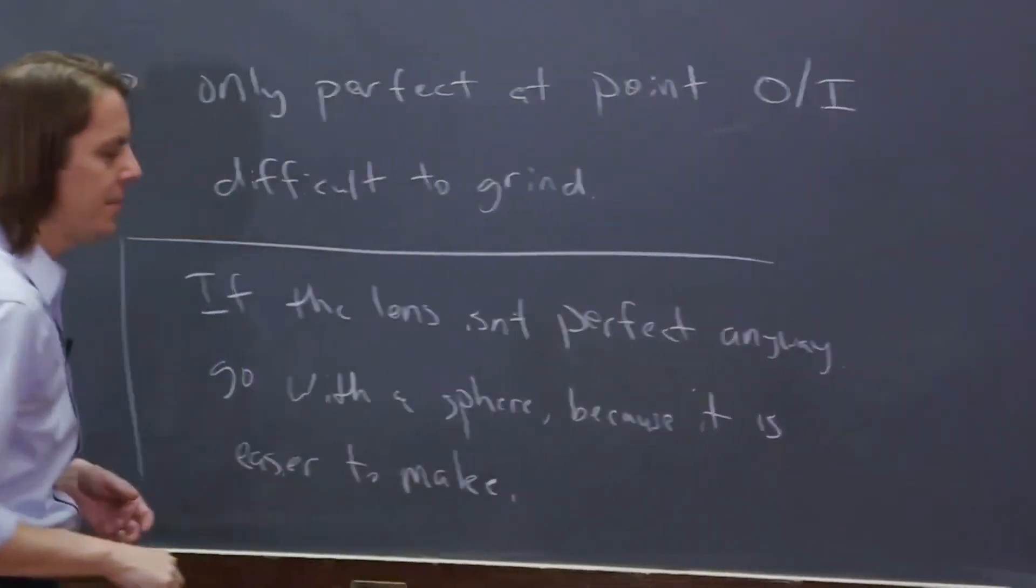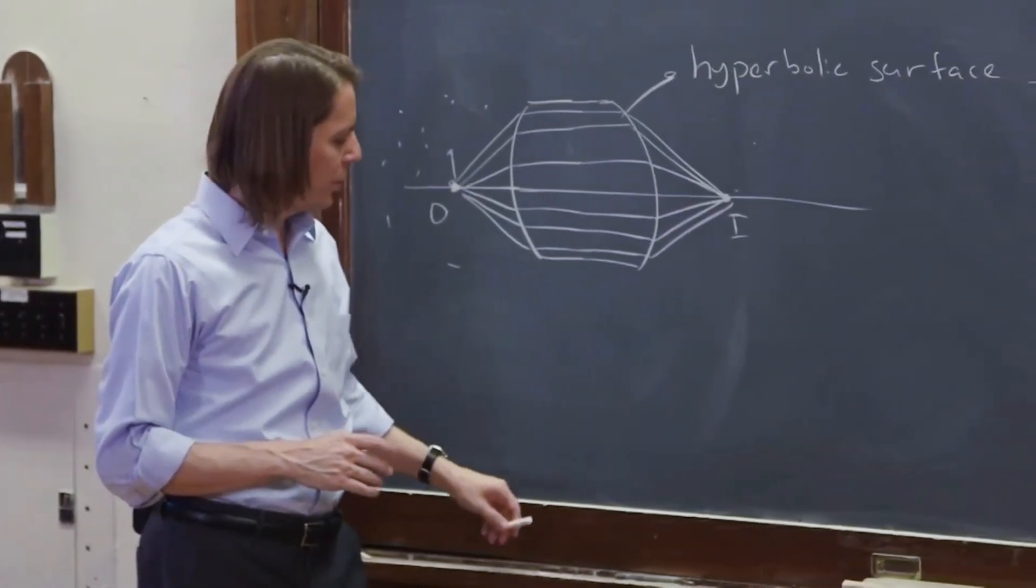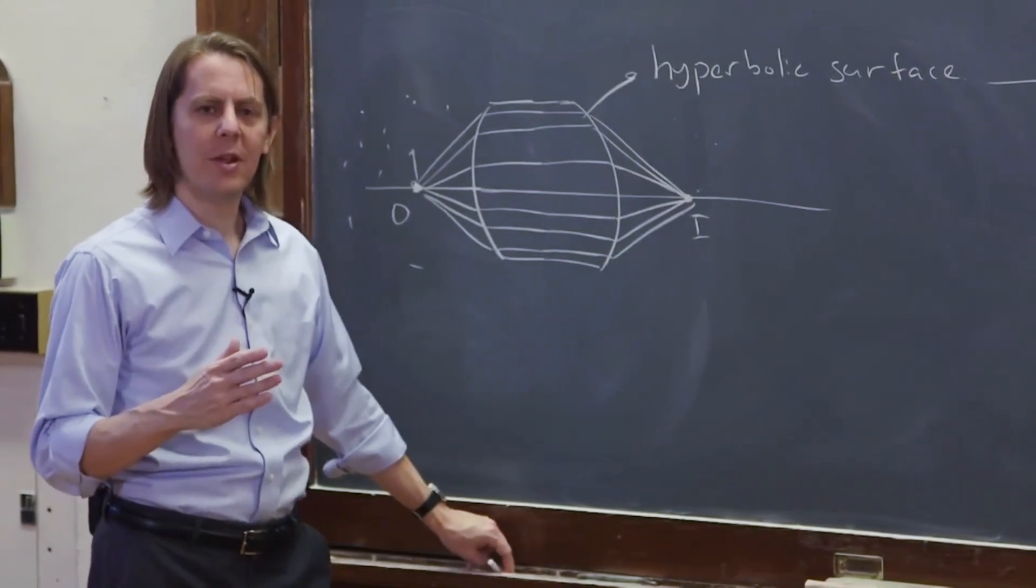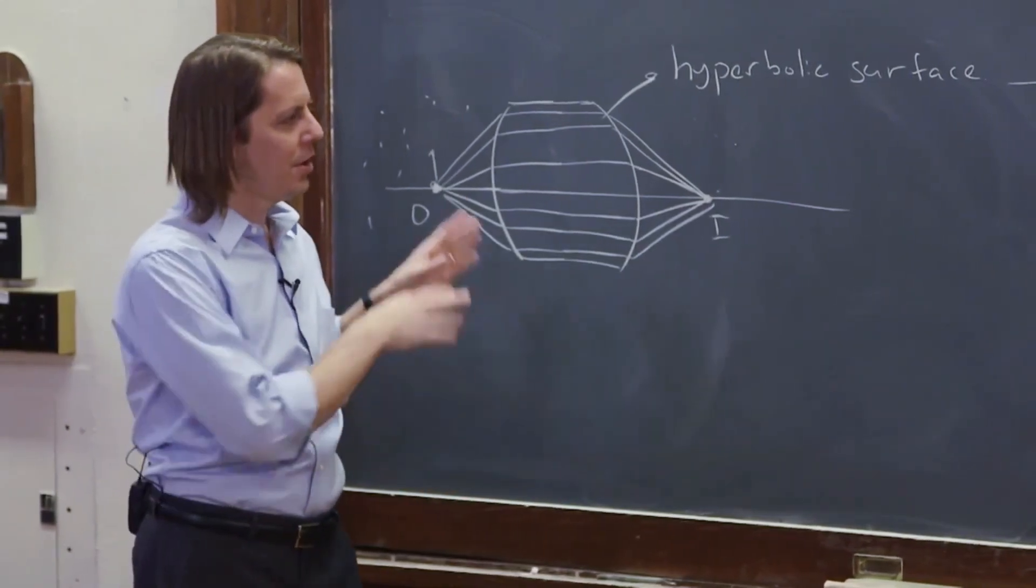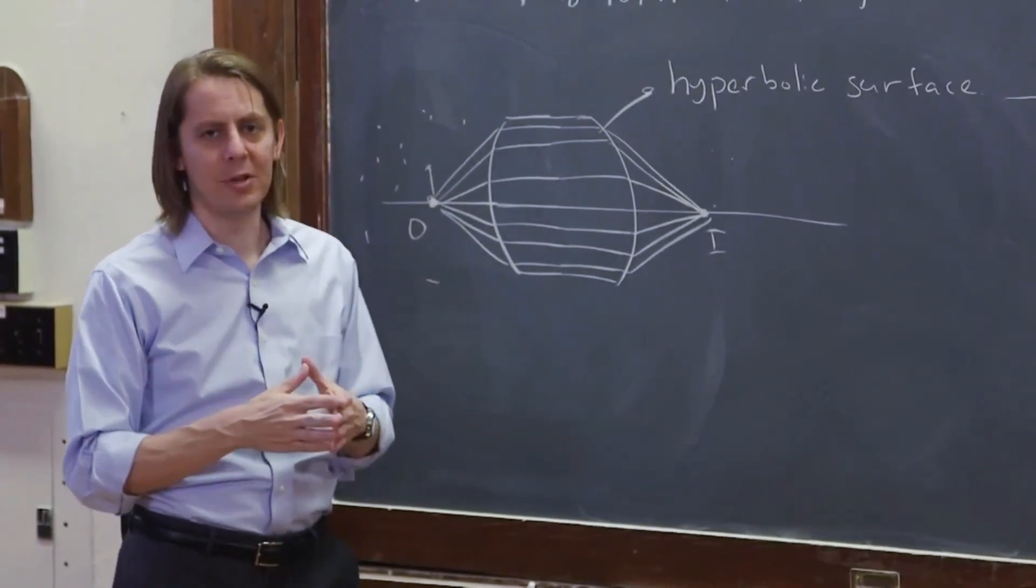This is the optical compromise that we go with. So we're going to do our calculations of how a lens works, not on a Cartesian ovoid, not on a hyperboloid, but on just a spherical curve. And we'll deal with the aberrations later.